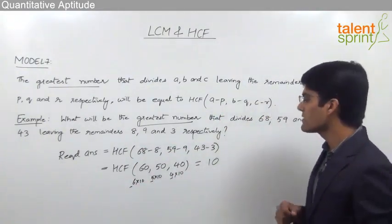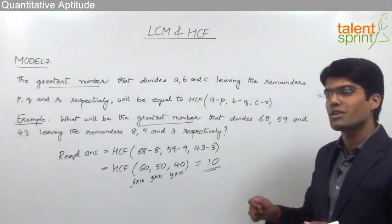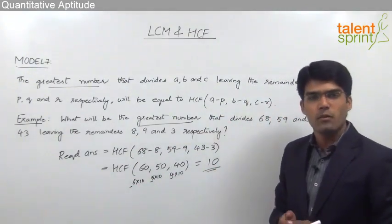So the answer for this question is 10. So this is how we can solve questions related to HCF where when a particular number divides three different numbers, we get three different remainders.